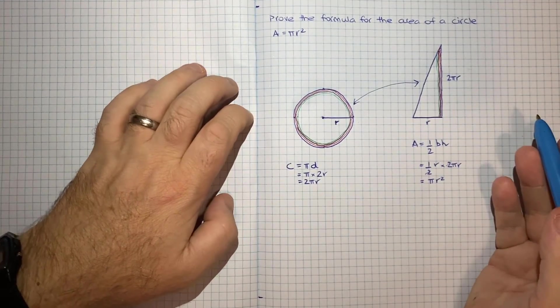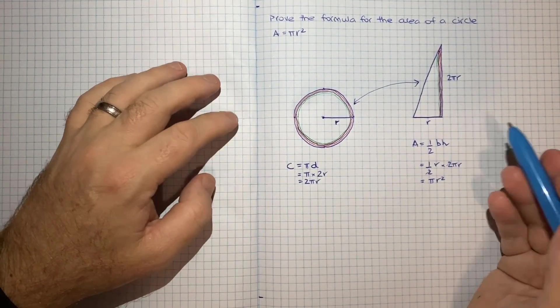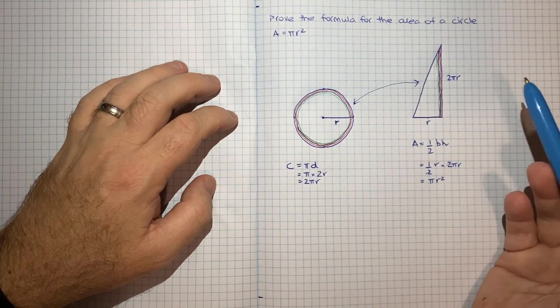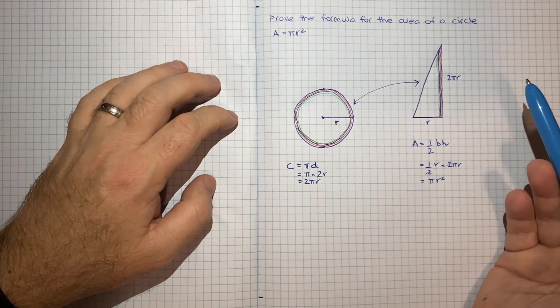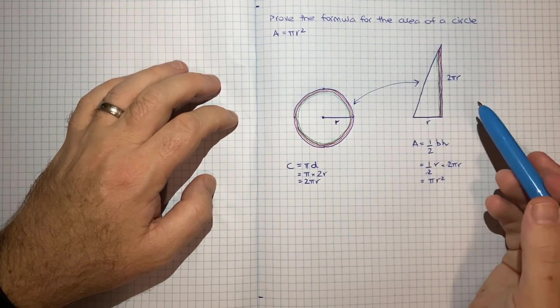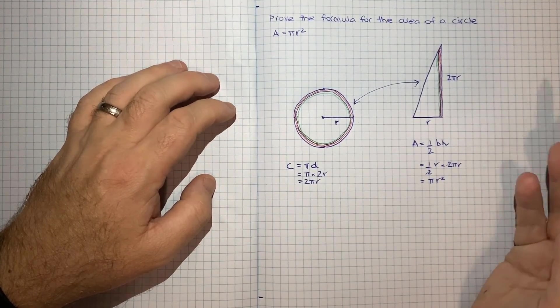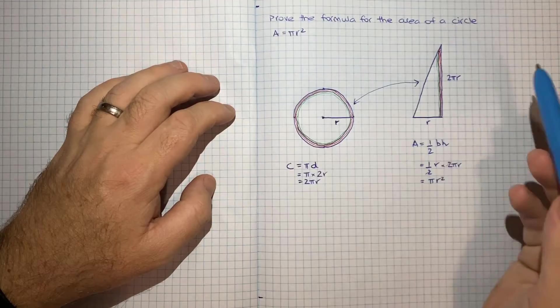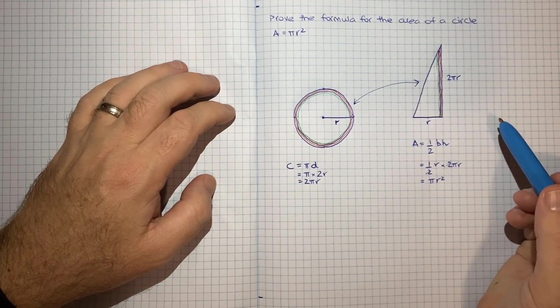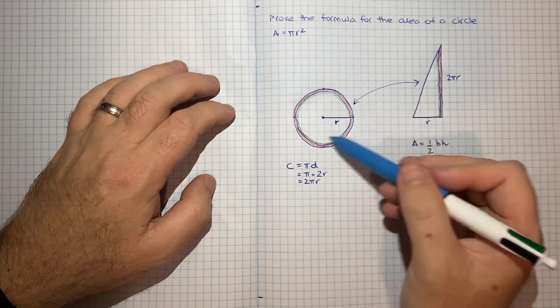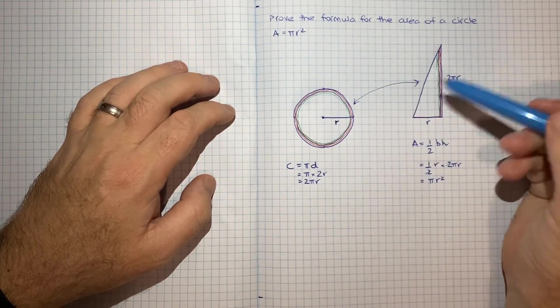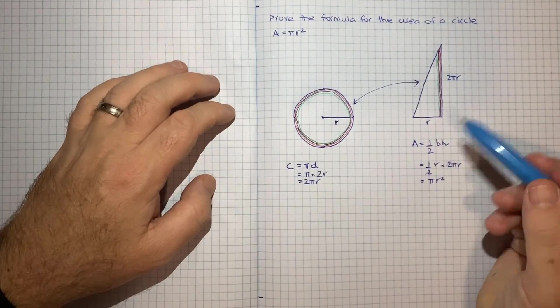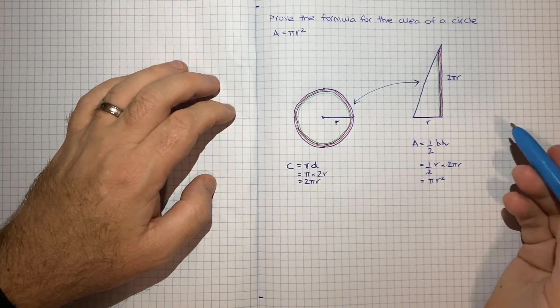So yeah, hopefully you found that interesting. Again, this is definitely not the only way to prove this formula, but I think it's a really simple way and a way that hopefully now that you've seen it, you can remember it. So that if you ever are drawing a blank on the formula for the area of a circle, perhaps you could just think of these concentric circles and unwinding them and realising you get to a triangle and maybe you could just derive it from scratch if you ever had to.